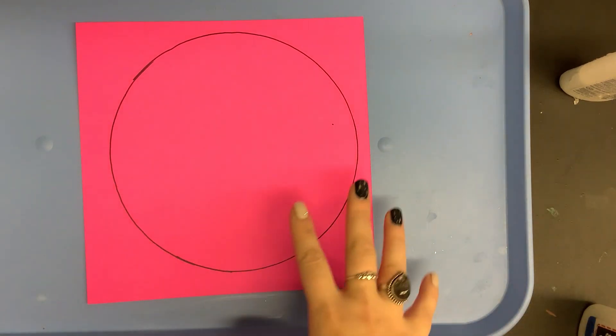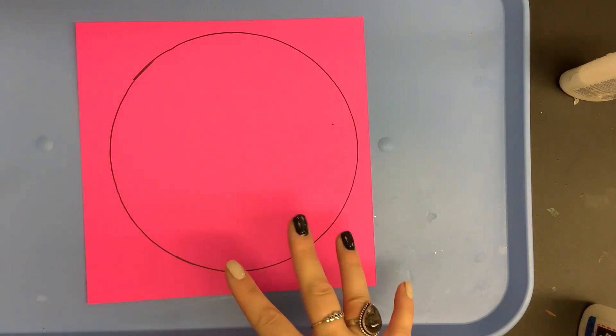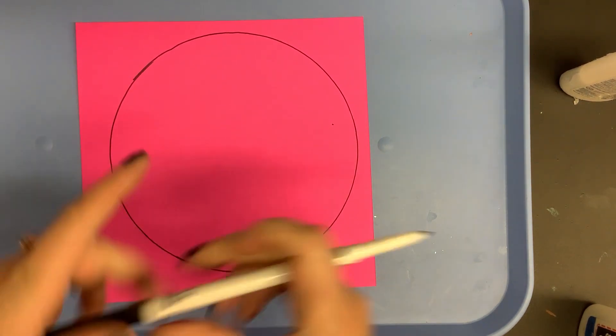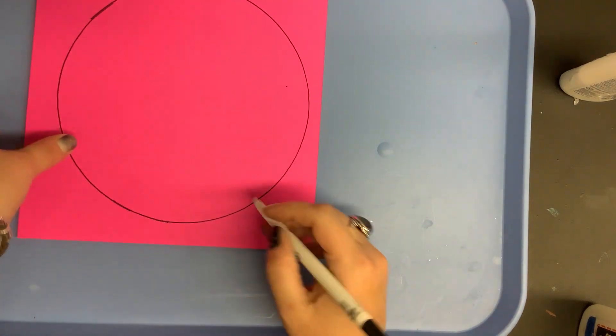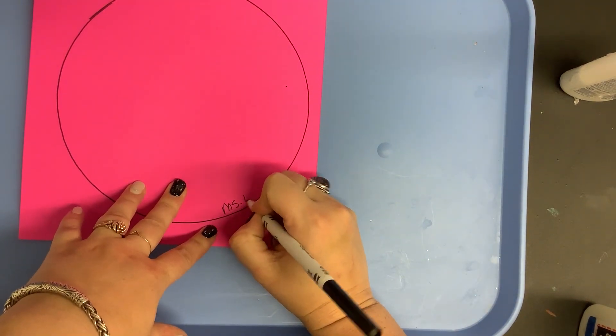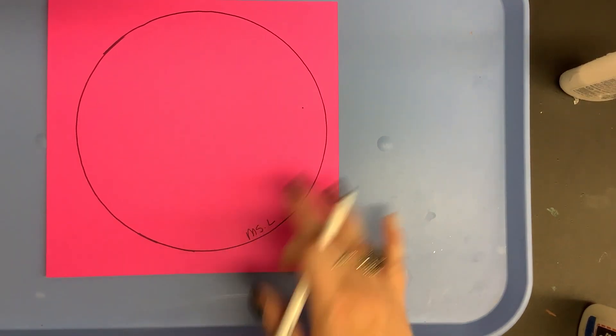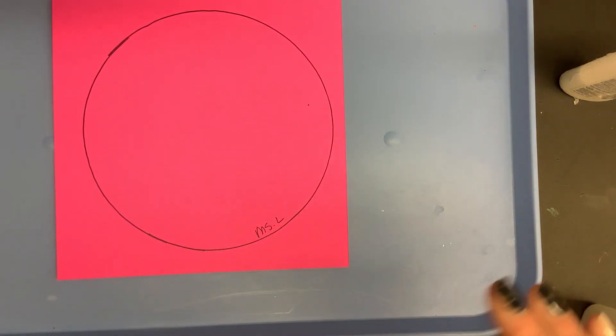So when you get your paper you're gonna notice that there's already a dot on it and all you have to do is label it. So at the bottom you're gonna write your name. I'm gonna write my name on the bottom and then whatever you do for your design you just want to make sure that you're not covering it up.